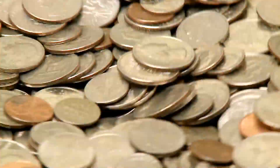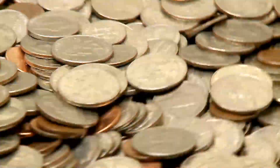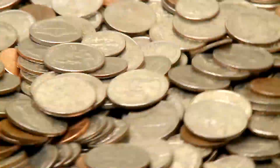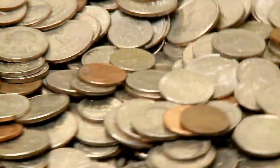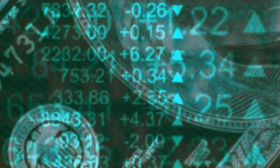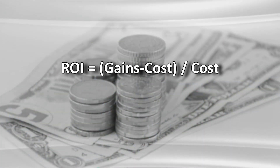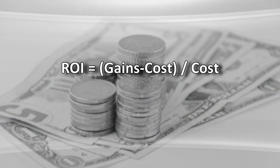There is nothing simpler than ROI when we discuss it as a formula. To find out the returns on an investment, you begin by taking the gains on the investment and the cost incurred, and then divide it by the total cost of the investment. This gives you the formula: ROI equals gains minus cost, divided by cost.